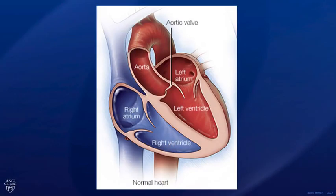The normal aortic valve is a three-leaflet structure that separates the ascending aorta from the left ventricle, which is the main pumping chamber of the heart. During the contraction of the heart, the aortic valve typically opens three to five square centimeters. As the heart relaxes, this valve then closes and prevents leakage of blood from the ascending aorta backwards into the heart.